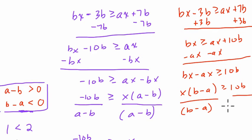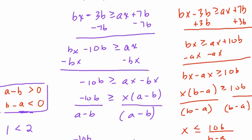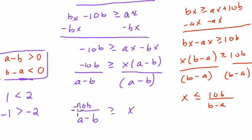Well, divide both sides by b minus a. And we get x is now, instead of greater than or equal to, is less than or equal to 10b over b minus a. So we reverse the sign because we divided by a negative. Now these two are actually exactly the same. Negative 10b over a minus b is the same as 10b over b minus a.